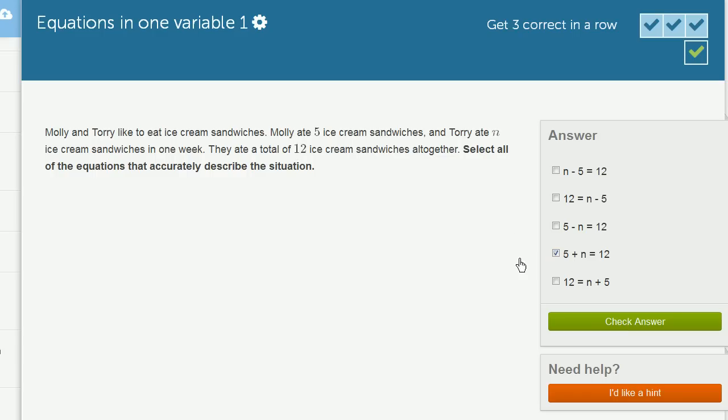Now, anything else that we check has to be consistent with 5 plus N is equal to 12. Or it has to be a way to algebraically manipulate from this to anything else that is true. So let's go one by one. So is N minus 5 equal to 12? N minus 5 is going to be the difference between what Tori ate and Molly ate. And that's not going to be 12. Their sum is 12. So we're not going to check that.